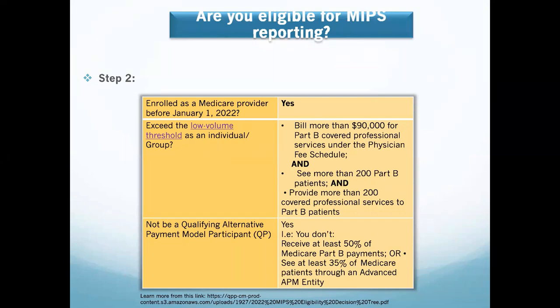The last eligibility condition is that you must not be a qualifying alternative payment model participant. If you are reporting on APM, you will not be required to report on MIPS. To be reporting on MIPS and not APM, you must not be qualified as a QP or participant of the APM, meaning you do not receive at least 50% of Medicare Part B payments or see at least 35% of Medicare patients through an advanced APM entity.